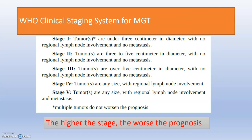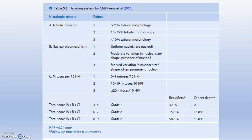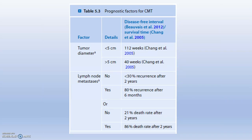The clinical staging system for mammary gland tumors ranges from stage 1 to stage 5. In stage 5, tumors are of any size with involvement and metastasis of regional lymph nodes. Stage 4 does not involve metastasis. The higher the stage, the worse the prognosis — stages 3, 4, and 5 carry increasingly difficult management and poorer outcomes. The grading system involves tubular formation, nuclear pleomorphism, and mitosis per high-power field, which assists histopathological assessment of adenoma or carcinoma.